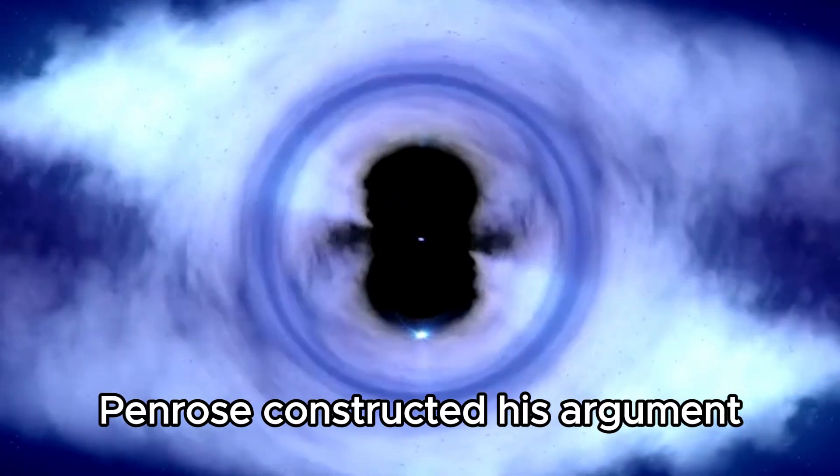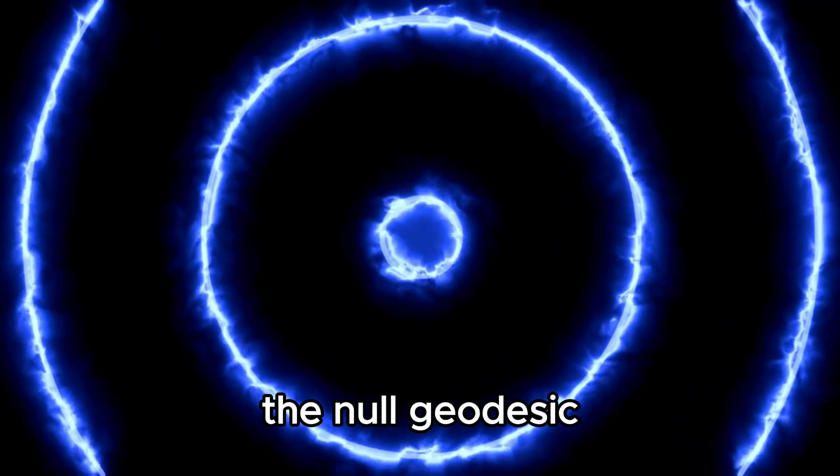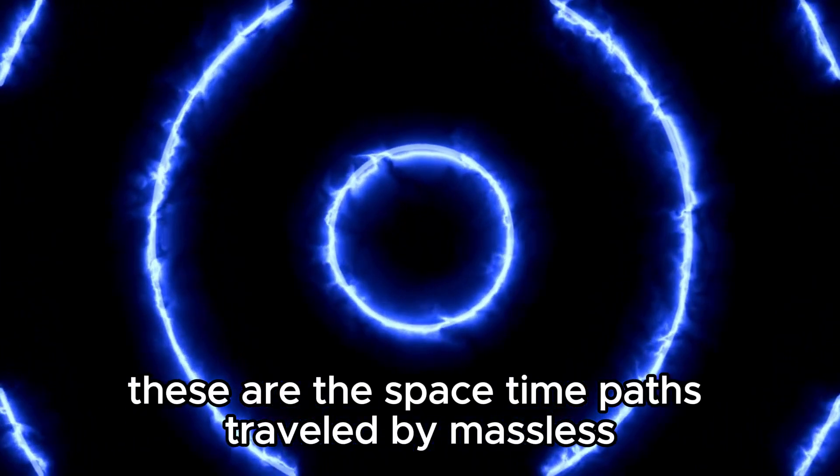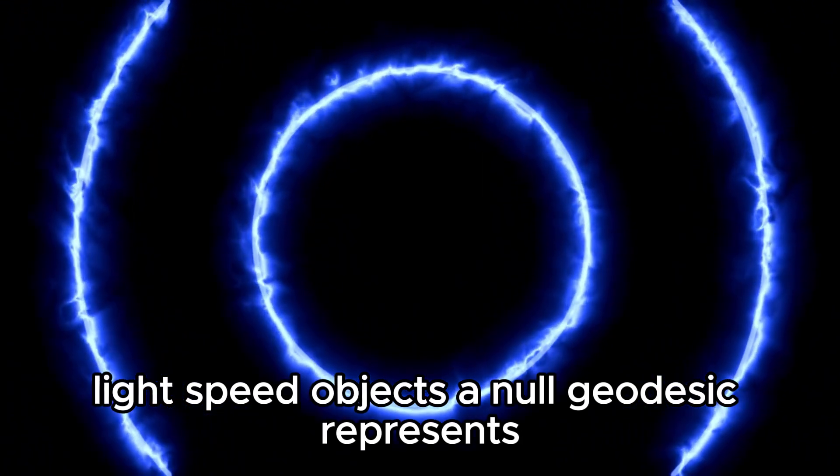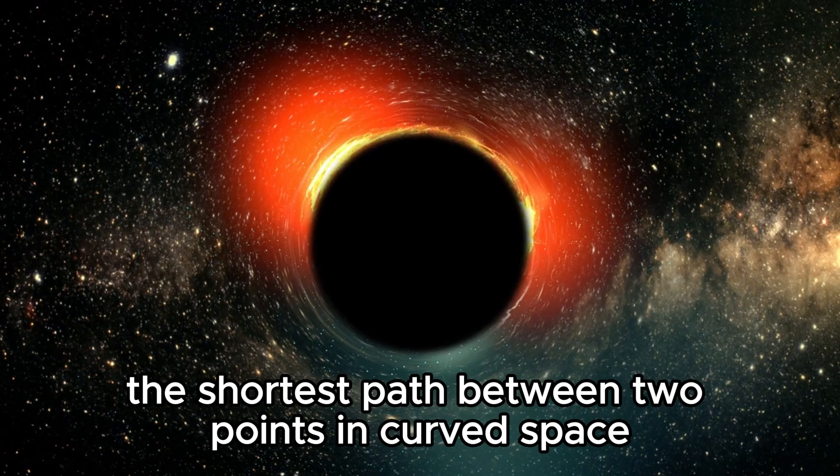Penrose constructed his argument using a particular type of geodesic, the null geodesic. These are the space-time paths traveled by massless light-speed objects. A null geodesic represents the shortest path between two points in curved space.